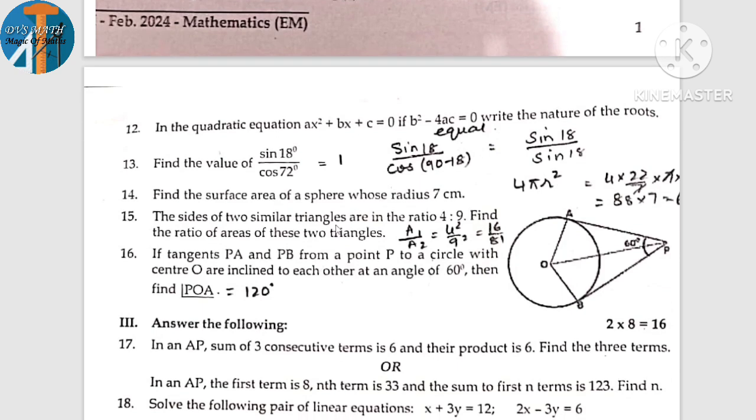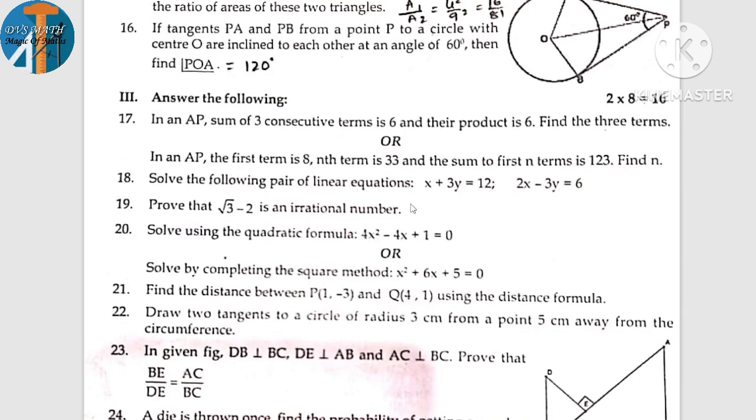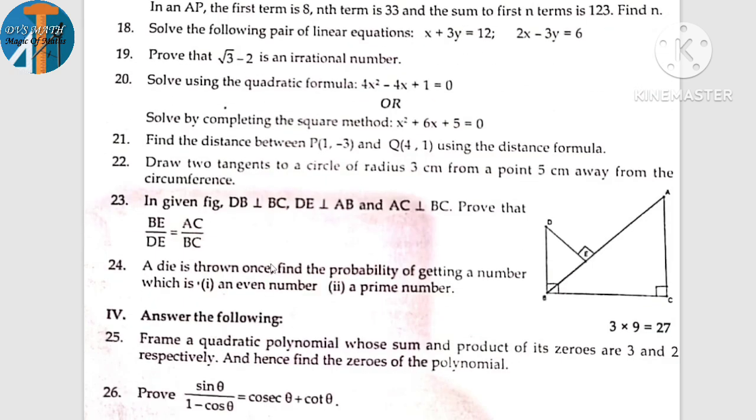Quadratic equation, nature of roots, the same question. Ratio 4 is to 9, 16 is to 81. Solving for x and y, proving irrational number, quadratic formula, distance from center, construction of tangents from circle, dice. Prime number, even number, odd number, same concept.